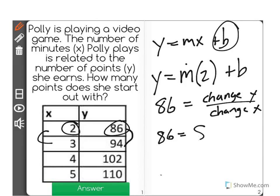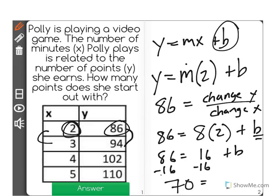86 equals 8, our rate of change, times 2, the x value, plus b, which is what we're looking for. So 86 equals 16 plus b. Subtract 16 from both sides, and we find that b equals 70. That's the number of points she started with.